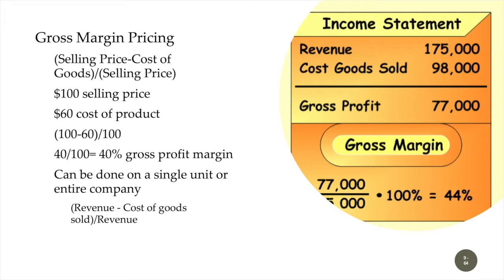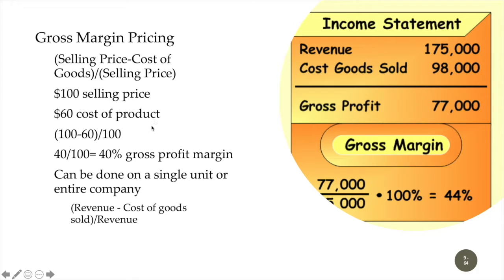We've got to at least come up with a starting point. To get your gross margin pricing — for those who've taken accounting — it's your selling price minus your cost of goods sold, divided back by your selling price. If a product sells for $100 and costs $60 to produce, then $100 minus $60 is $40, divided by $100 — that's a 40% gross profit margin.